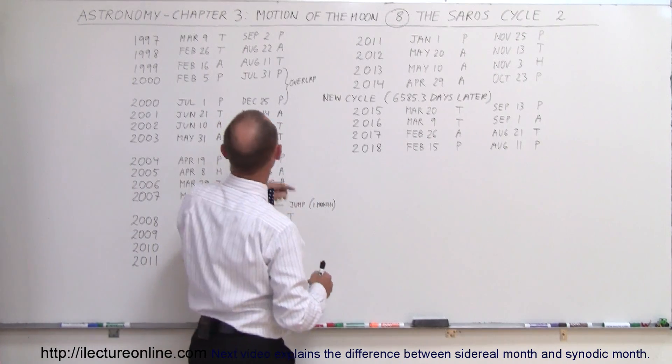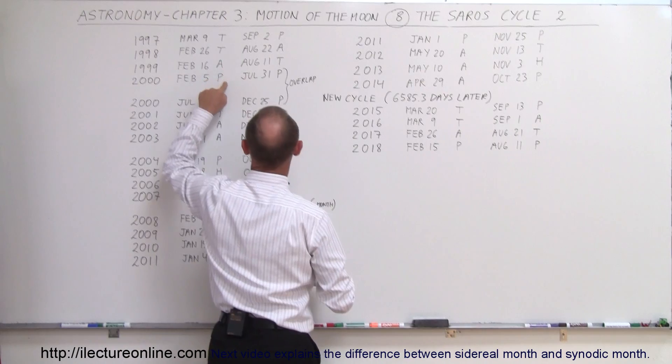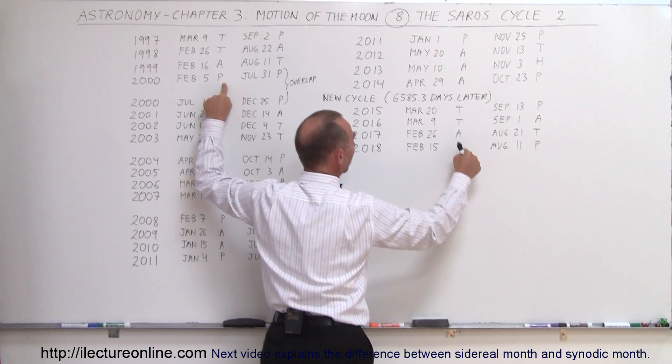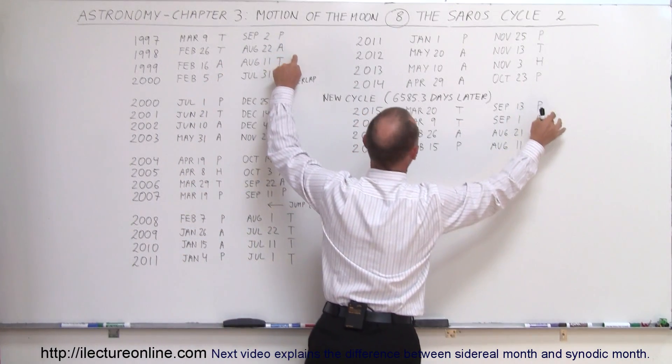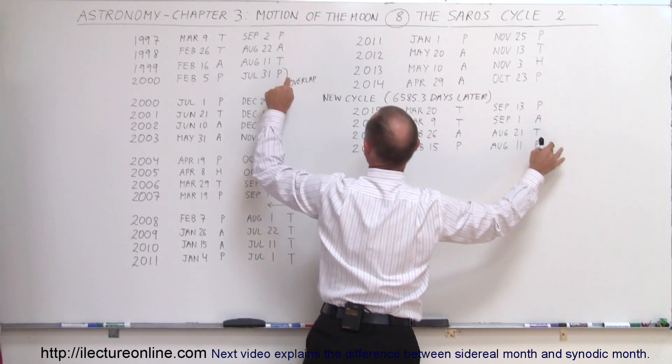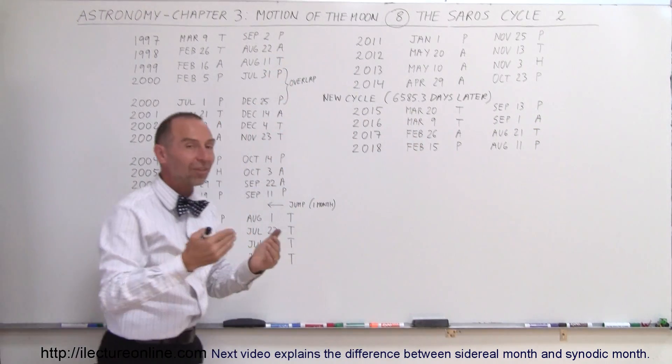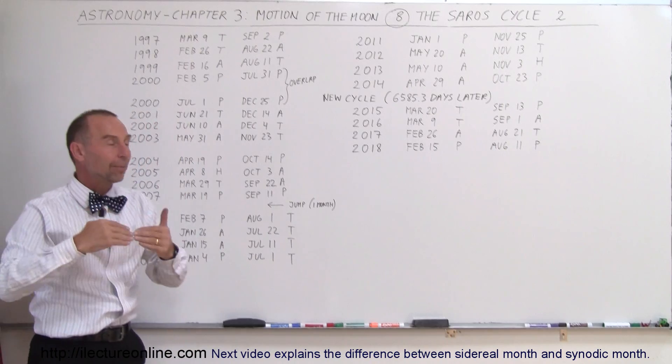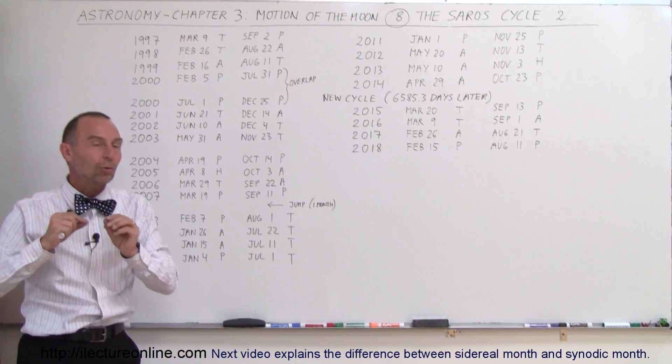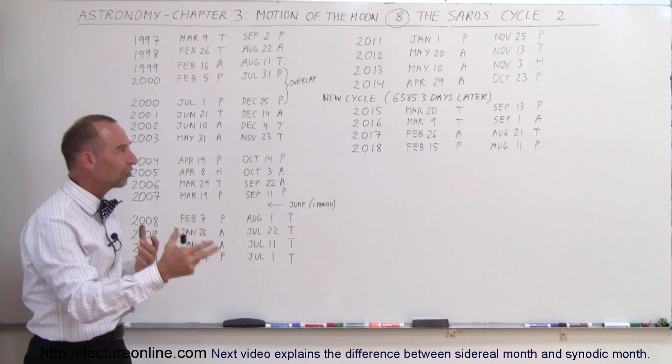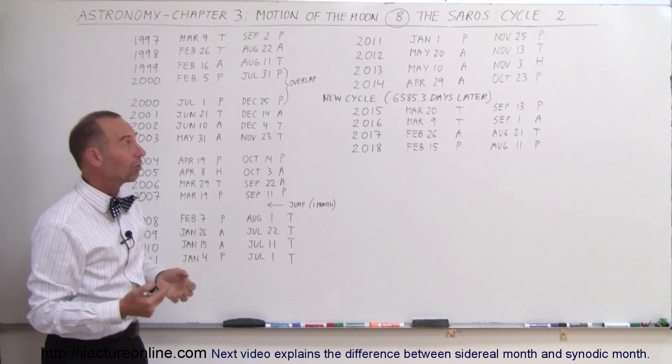Notice we have a total, total, annular, and a partial, total, total, annular, partial. We have a partial, annular, total, and partial. So again, the cycle doesn't only repeat, but it also repeats in the type of solar eclipse that we're going to see, based upon the position of the sun, the moon, and the earth. Really interesting.